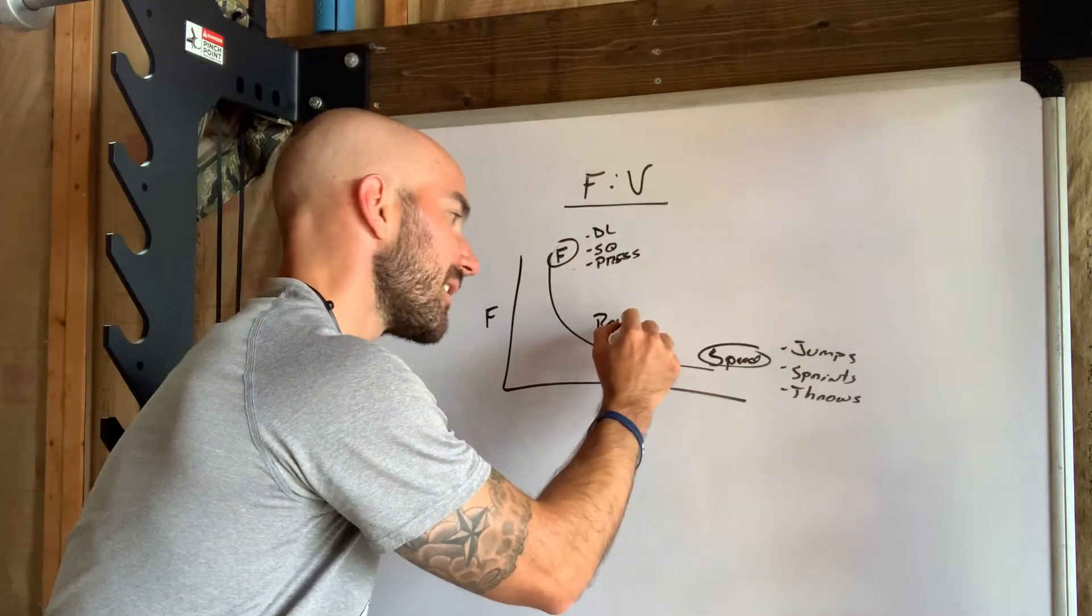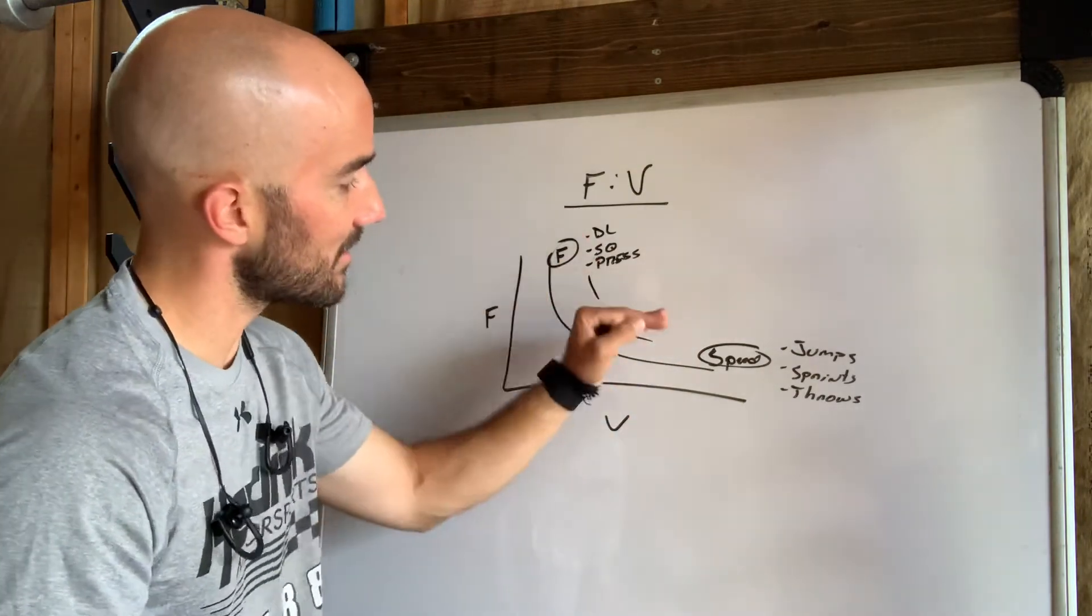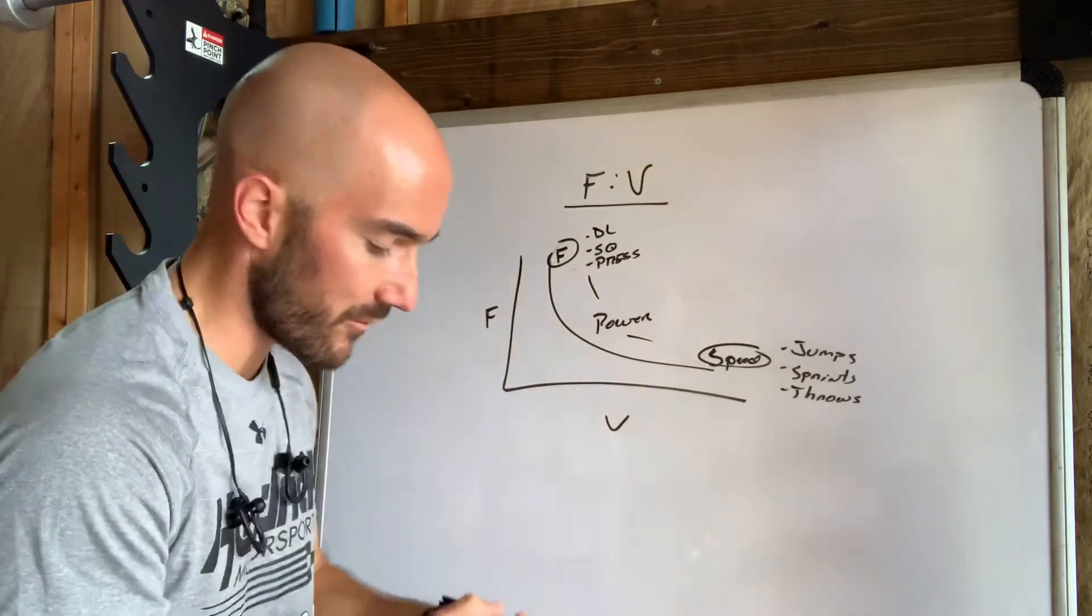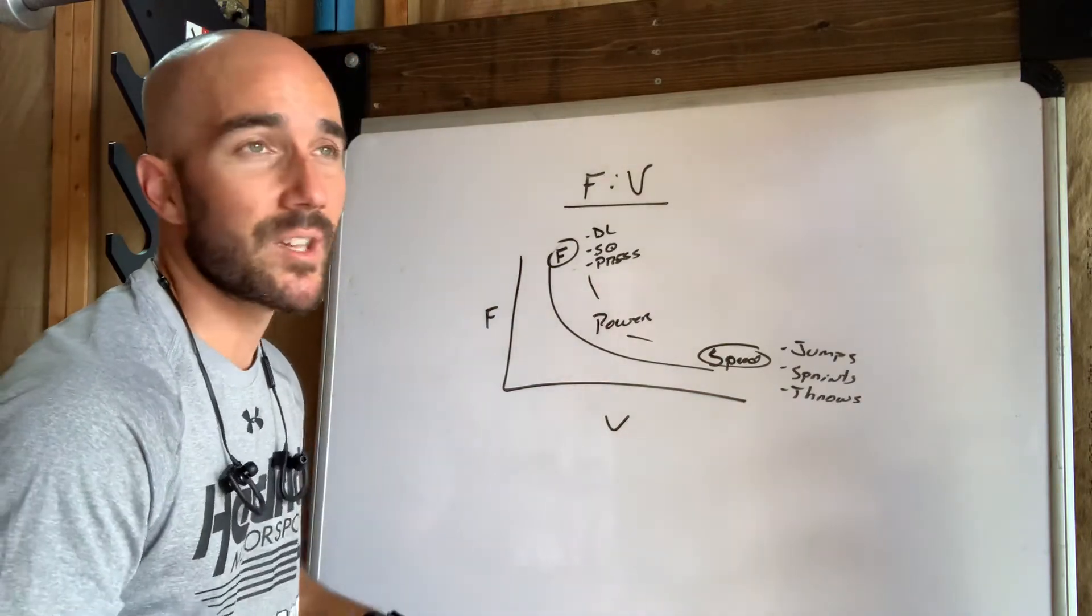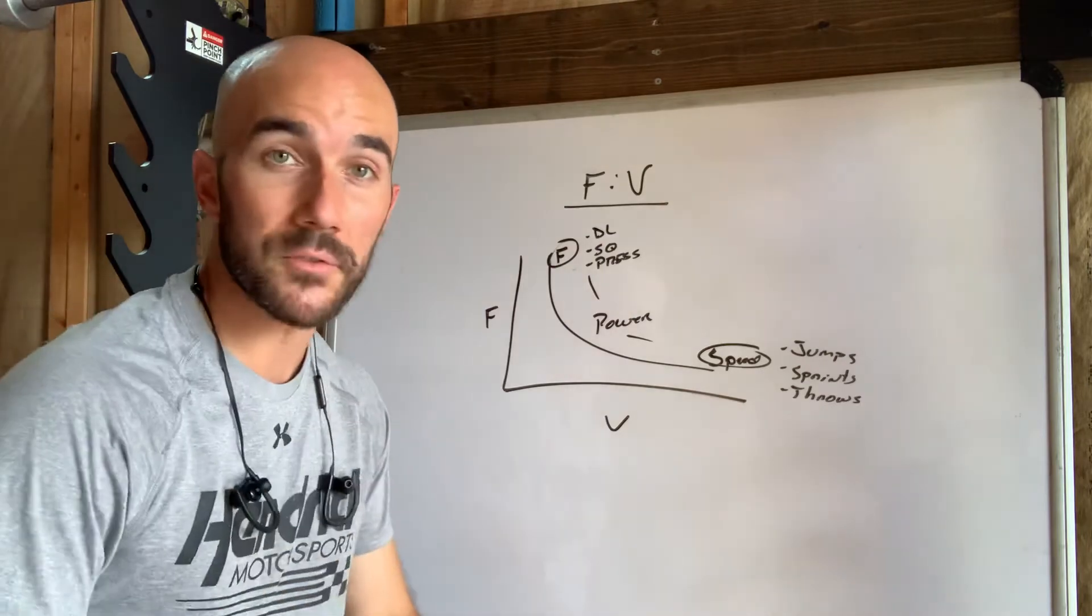In the middle is power. And that's kind of the combination of the two. Things that exist somewhere through there could be a little bit heavier throws. It could be your Olympic lifts. It could be any type of jump that's loaded pretty heavily or from altitude.